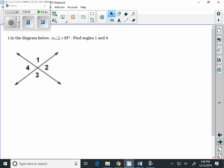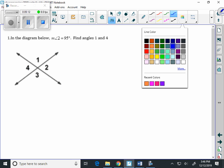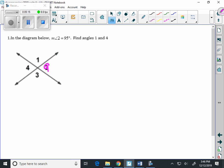In the diagram below, measure of angle two is 95 degrees. Here is 95 degrees. We want to find how big angle one and angle four are. Well, first of all, I'm going to start with angle four, because this angle here and this angle there are vertical angles. And what we know about vertical angles is that they are equal. So, angle four, I'm going to do the measure of angle four, is also 95 degrees.